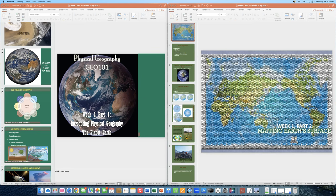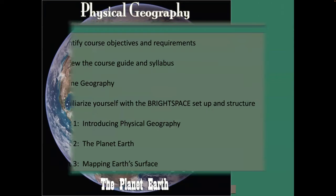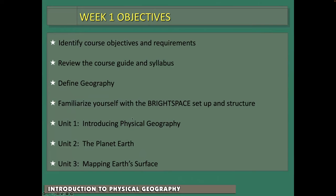If you have any questions, contact me as soon as you can. With that, let's get going with part one, week one. We're going to be talking about physical geography — an introduction to physical geography. These are the week one objectives: identifying the course requirements, familiarizing yourself with Brightspace, introducing physical geography, planet Earth, and mapping Earth's surface. Those are the three units covered during week one.